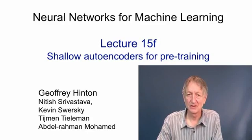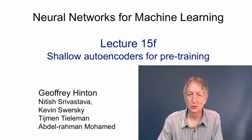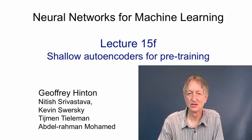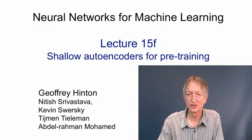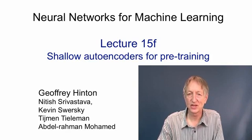In this video, I'm going to talk about alternative pre-training methods for learning deep neural nets. I introduced pre-training using restricted Boltzmann machines trained with contrastive divergence, but after that people discovered there are many other ways to pre-train layers of features. And indeed, if you initialise the weights correctly, you may not need pre-training at all, provided you have enough labelled data.